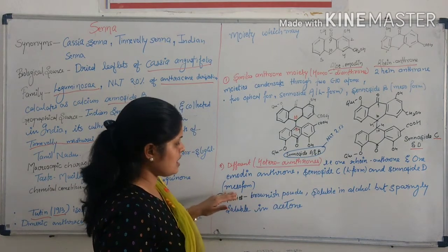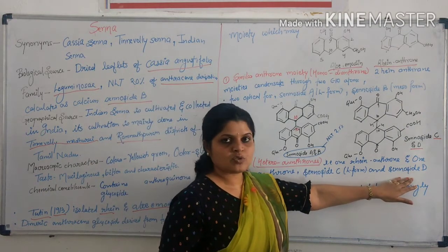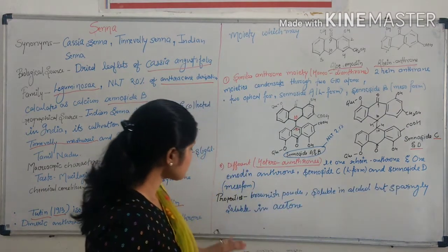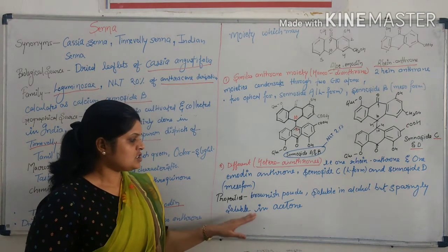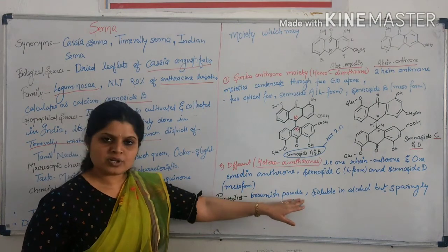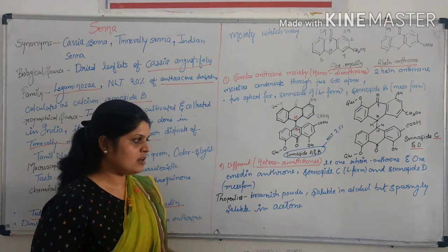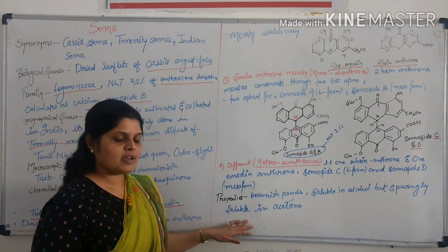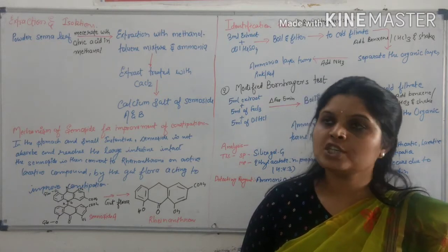When it is available in meso form, then it is called sennoside D. The physical property of sennosides: sennoside is a gum-like powder. Sennoside is soluble in alcohol but is poorly soluble in extraction and isolation of sennosides.